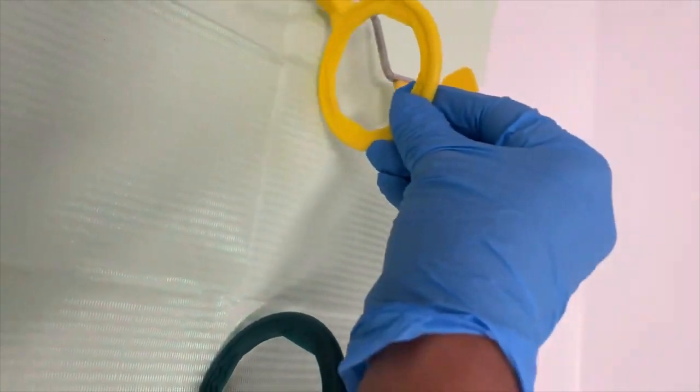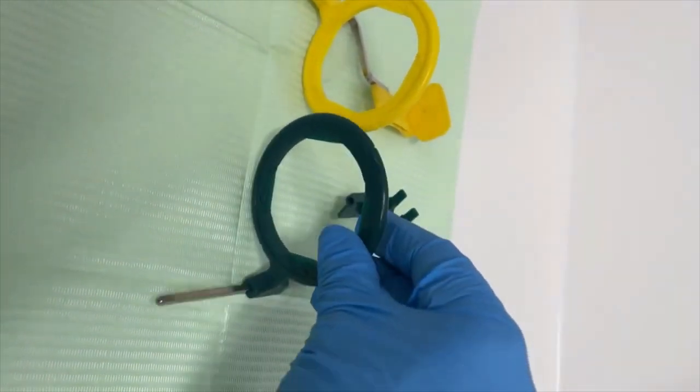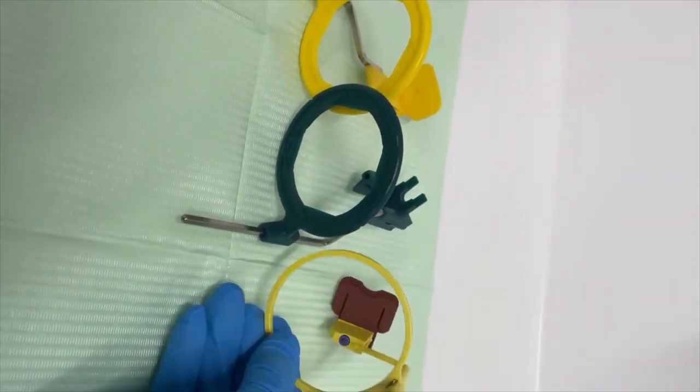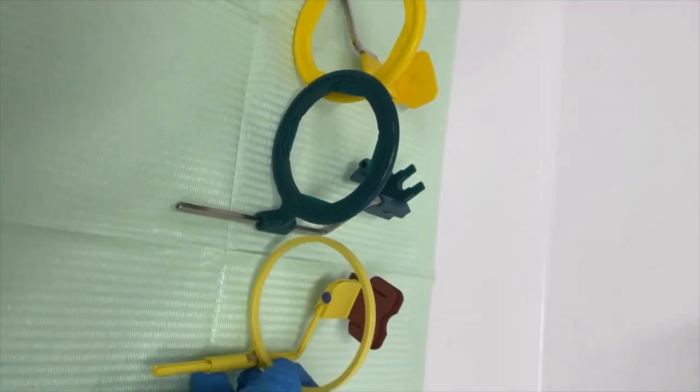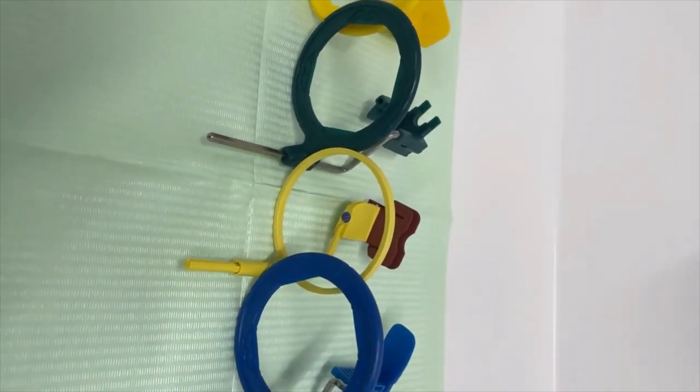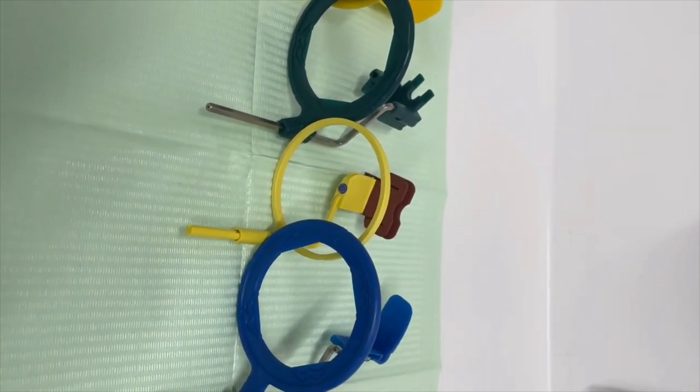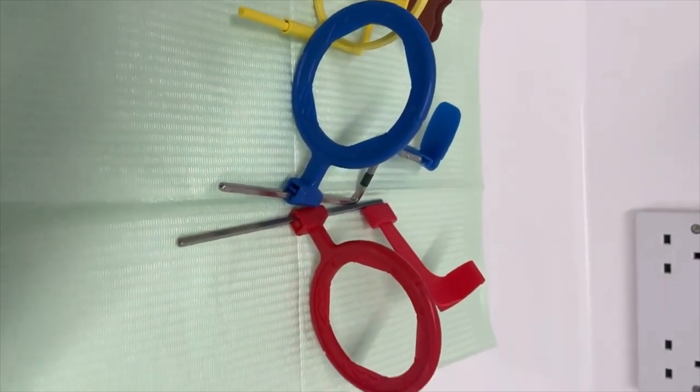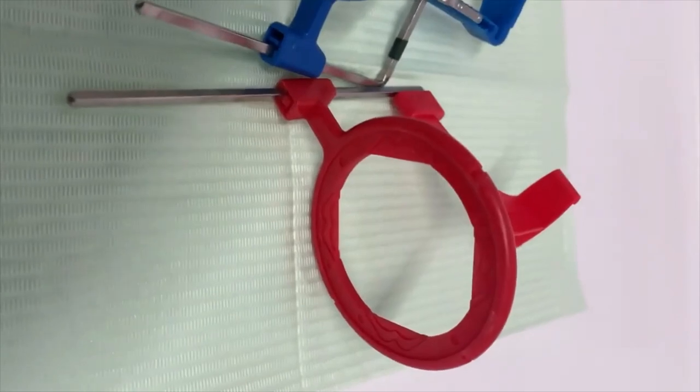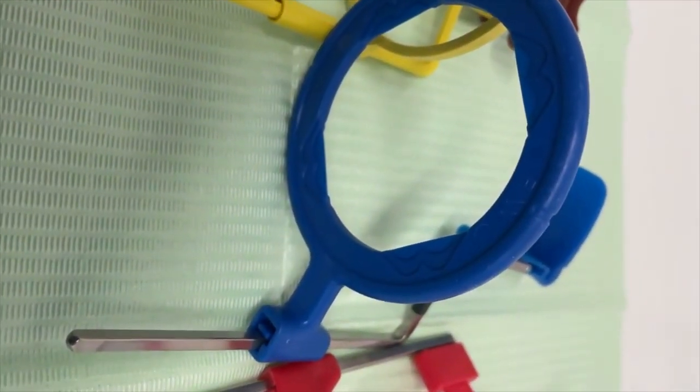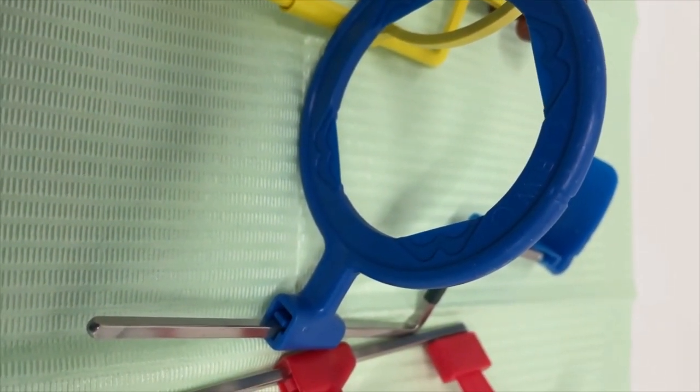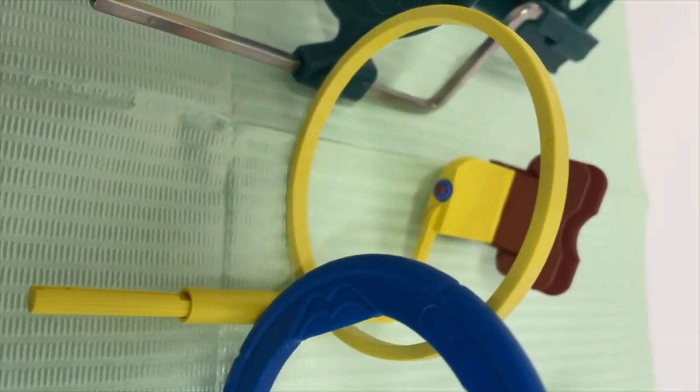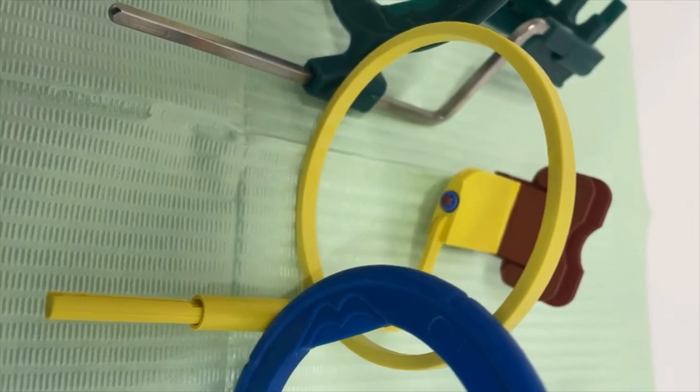So there are different kinds or different styles of x-ray holders, but I'm just giving you an idea of how an x-ray holder looks like. So there you go, that is the bitwing holder. This blue is the anterior periapical holder, and this yellow one is for posterior periapical holder.